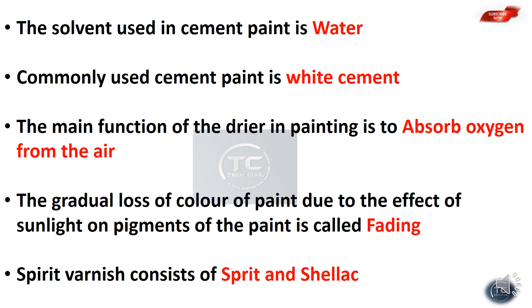The gradual loss of color of paint due to the effect of sunlight on the pigments of the paint is called fading. Fading is a defect in painting.